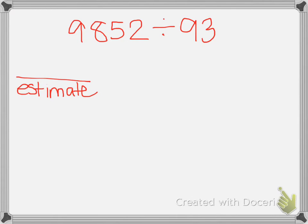Number 1 wants you to estimate and then actually solve. So if I were to estimate, I would say that 93 goes into 9,852 about 100 times. Because if I rounded this to 93,000 divided by 93, if I ignore those zeros, 93 goes into 93 one time. Add those zeros back, it would be 100.